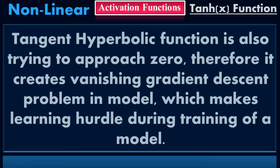The tangent hyperbolic function is also trying to approach zero. Therefore it creates a vanishing gradient problem in the model, which marks a learning hurdle during training. The same issue exists here in the tangent hyperbolic function because it is trying to approach zero, and that is the reason it carries vanishing gradient problem. This is the main reason we should avoid vanishing gradient problem as much as we can, as majority of activation functions have this issue.